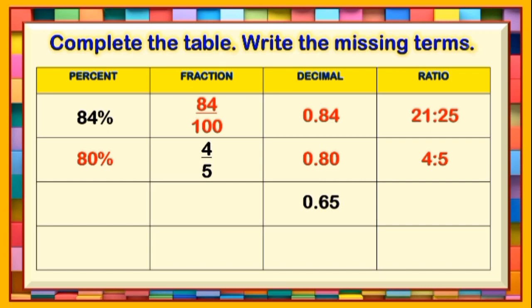The third given number is 0.65. Look for the equivalent percent, fraction, and ratio. The correct answers are 65%, 13/20, and 13 is to 20.